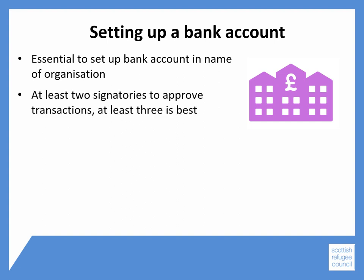You'll need at least two people to approve transactions. These people are called signatories, and it's a good idea to have three signatories on the account in case someone is unavailable. Make sure that these signatories aren't related or don't live together, as this could make your money less secure and may cause issues when you come to apply for funding.